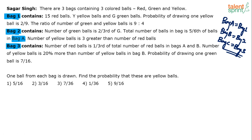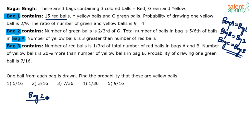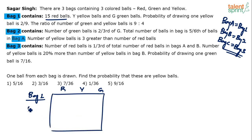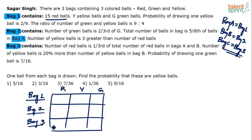Based on this data, we first need to find the number of red, yellow, and green balls in each bag. Once we know the contents, answering the questions becomes easy. Let's make a table with columns for red, yellow, and green balls, and rows for each of the three bags. This table must be filled before we proceed with the solution.